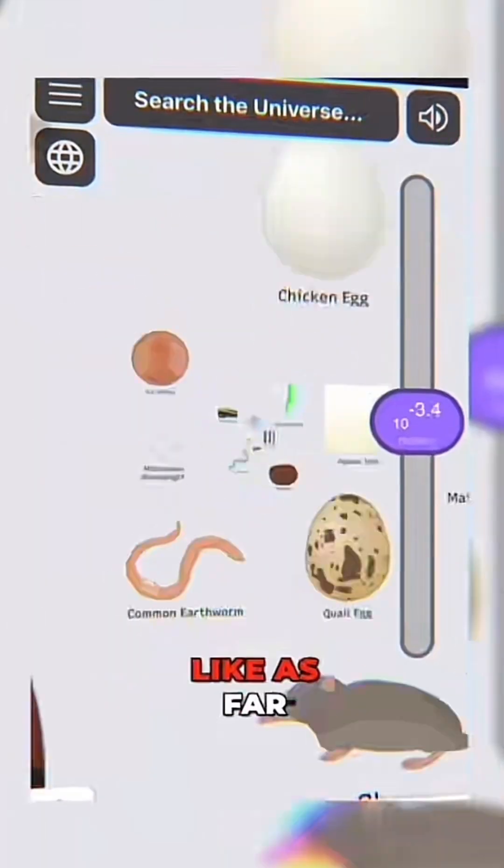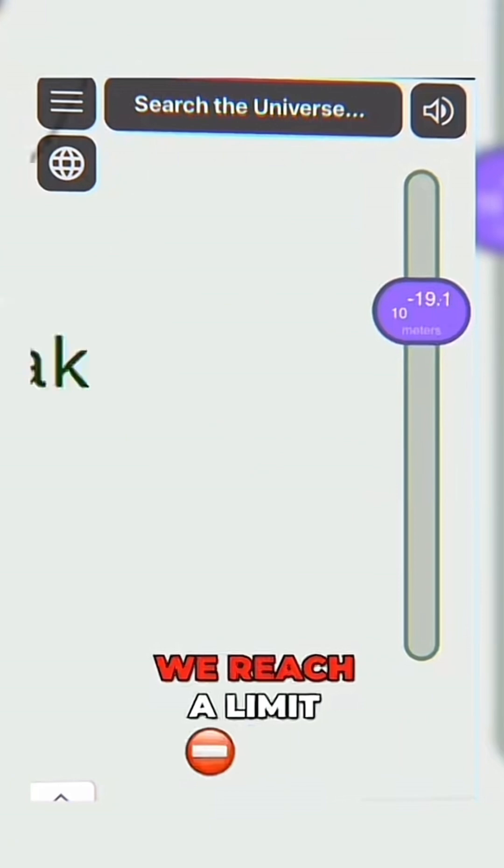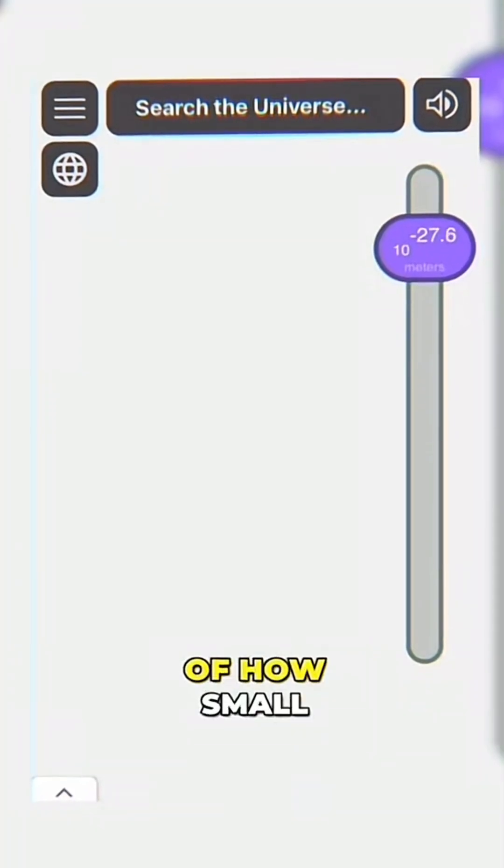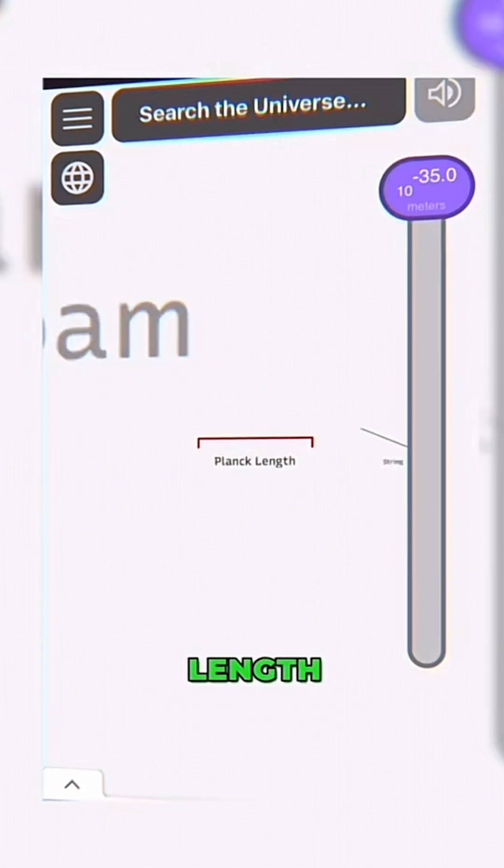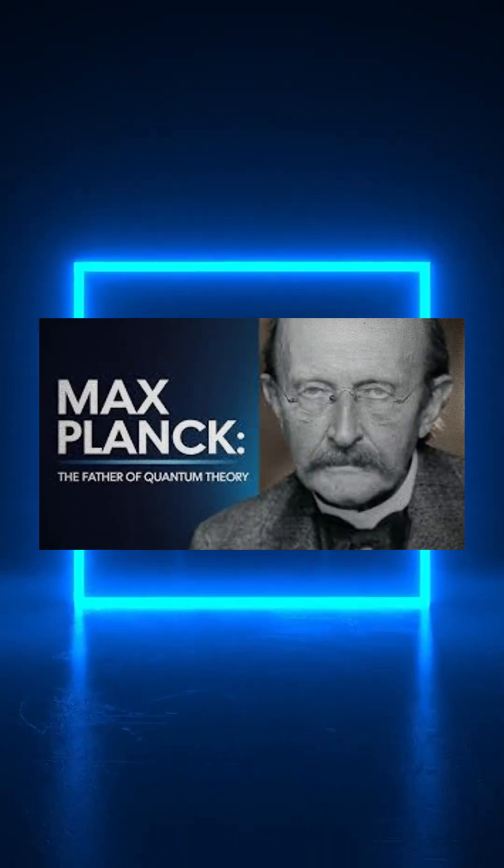If we just keep zooming like as far as we can go, we reach a limit of how small a distance can be. This is the Planck length, named after Max Planck.